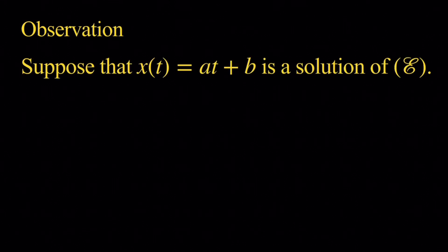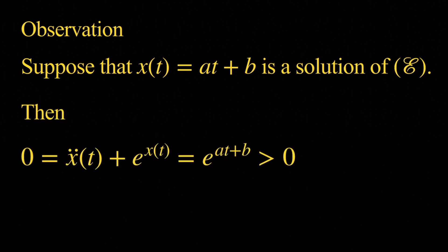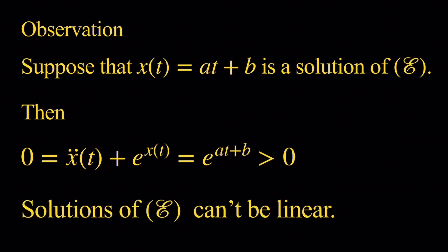Now let's assume that x of t equals at plus b is a solution of e. Because we have a linear function, if we differentiate it once we get a, and if we differentiate it twice we get 0. So if we substitute that into the differential equation, we get that 0 equals e to the power at plus b, which we know to be positive — a contradiction. Therefore, we cannot have a linear solution for our differential equation.